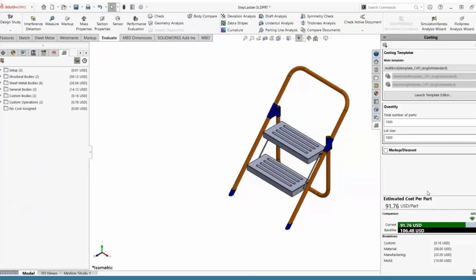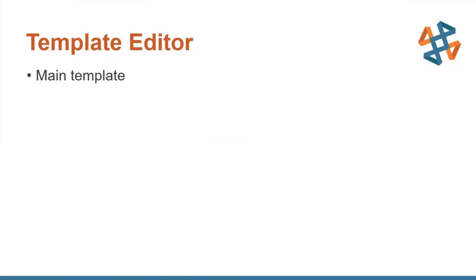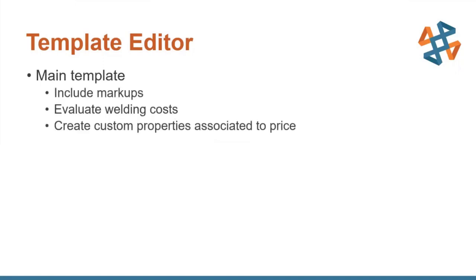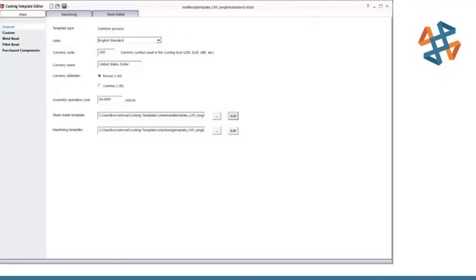Next, we'll talk about the Template Editor — the backbone that drives all of this data. Costing is only as accurate as the information we feed into the template. The main template can include markups or discounts, evaluate the costs of welds if you add welds in your assemblies or parts, and also create custom properties associated with price or cost.